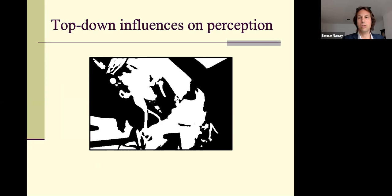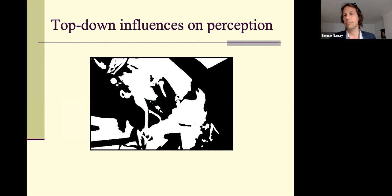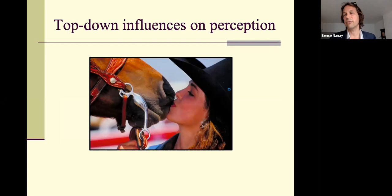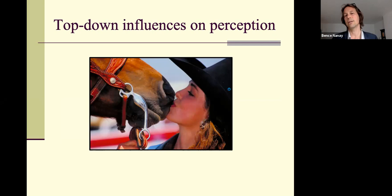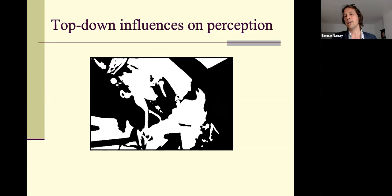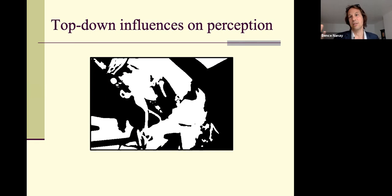If you look at a certain image, you might not know what it depicts. But after being shown what it depicts, if you look at the same picture again, you'll have a very different experience — and your visual system will literally work differently. A specific example: the line corresponding to a girl's nose in a two-tone image — there is no actual line there — but after seeing the color version, direction-sensitive neurons in primary visual cortex corresponding to the nose's contour fire intensely. That's a nice illustration of top-down influences on perception.